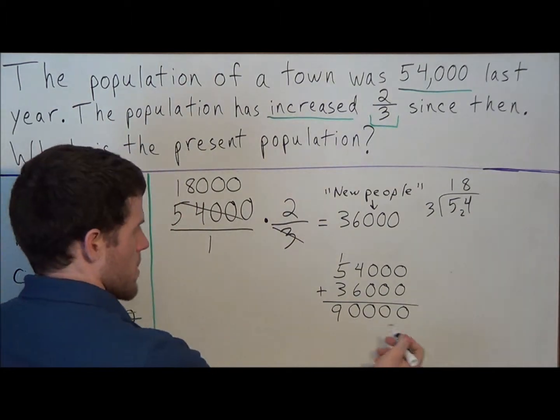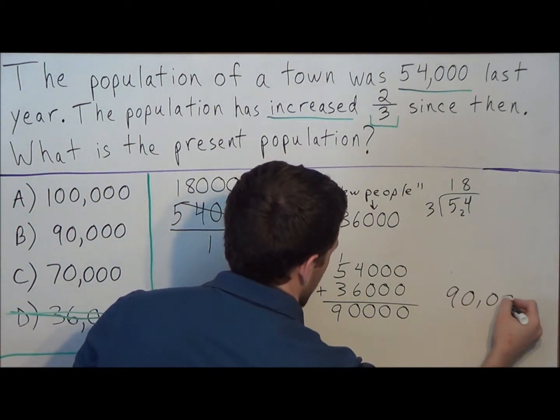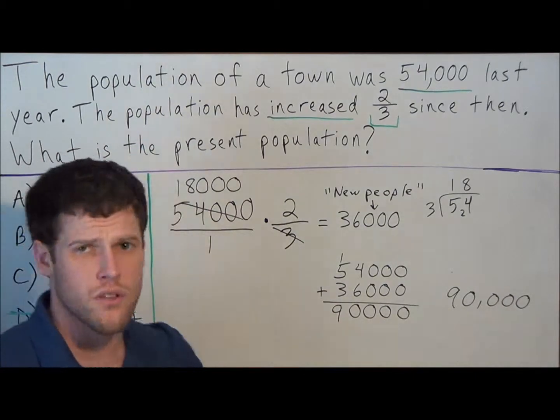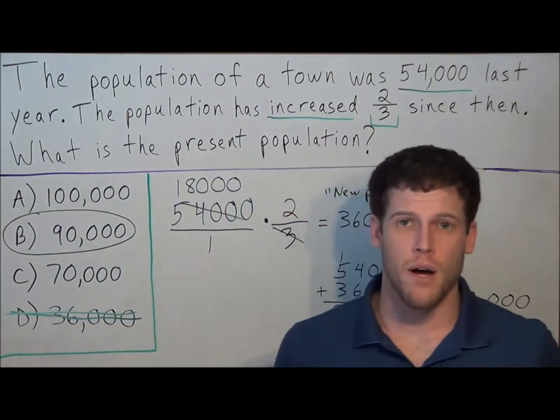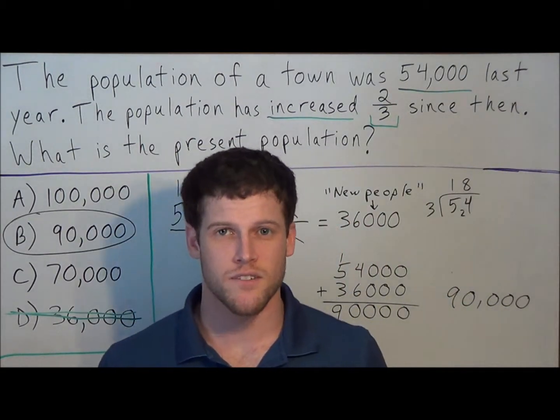So this tells us that the town now has 90,000 people. So we look over to our answer key here, and notice we're going to go with choice B. That the present population of this town is now 90,000 people.